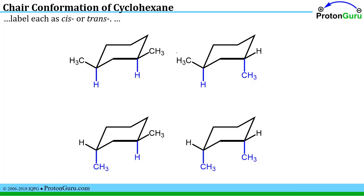The next part of the question asks us to label each of these as being either cis or trans. Well cis means that both of the substituents are pointed in the same direction. So if I have two that are up, like here, or two that are down, like here, those are examples of cis.